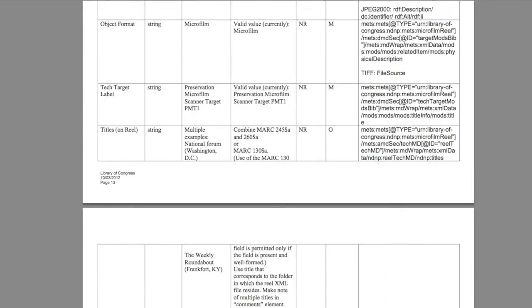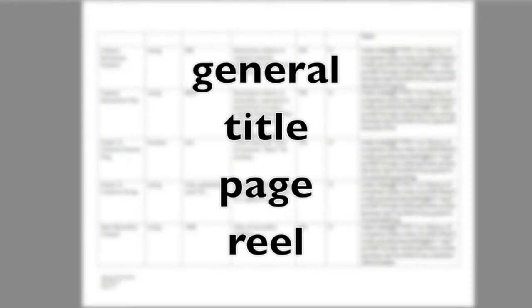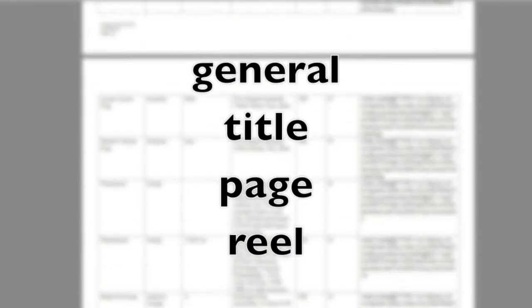The table is organized into four sections: general information, title information, page information, and reel information.